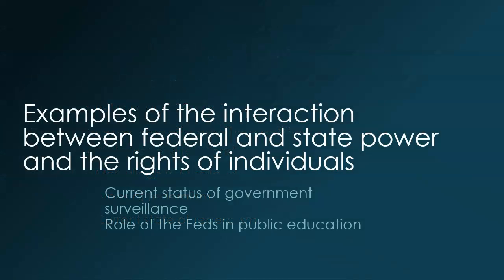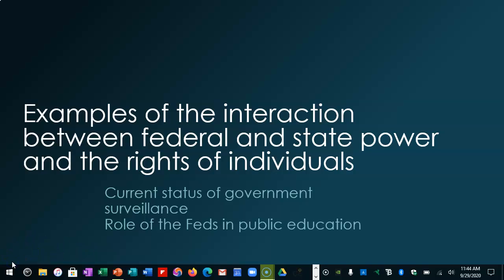Here's the confusing part. There are powers that the federal government specifically has — only the federal government. Printing money and declaring war make sense for only one government, the federal government. And there are things that only the states can do, like issuing driver's licenses.